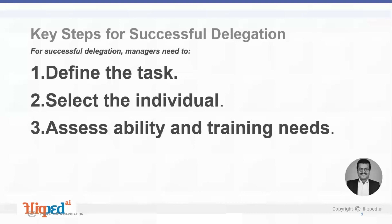The third step is to assess ability and training needs. Does the person identified have the skill sets required to be successful? Can he or she grasp what needs to be done? The selected employee must have the required knowledge, skills, abilities, and attitudes to execute the delegated task. If the individual does not possess the required competencies, the organization cannot proceed with delegation.